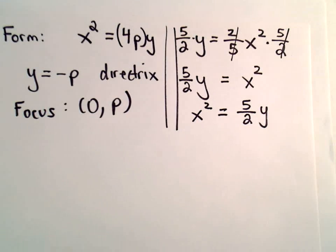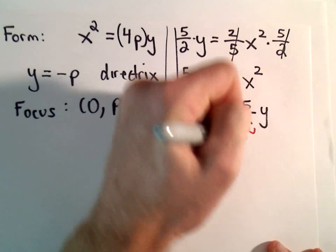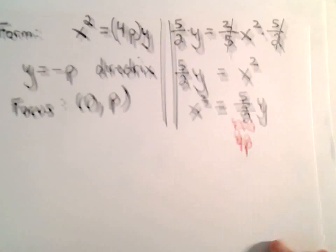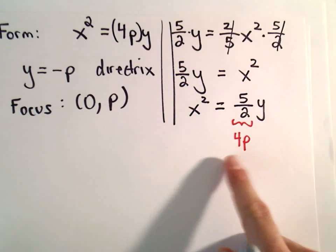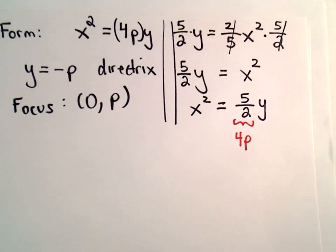Okay, so the idea, again, now, it says whatever's in front of the y, that's going to be our value. We're going to rewrite that so that it says 4 times some number equals 5 over 2.